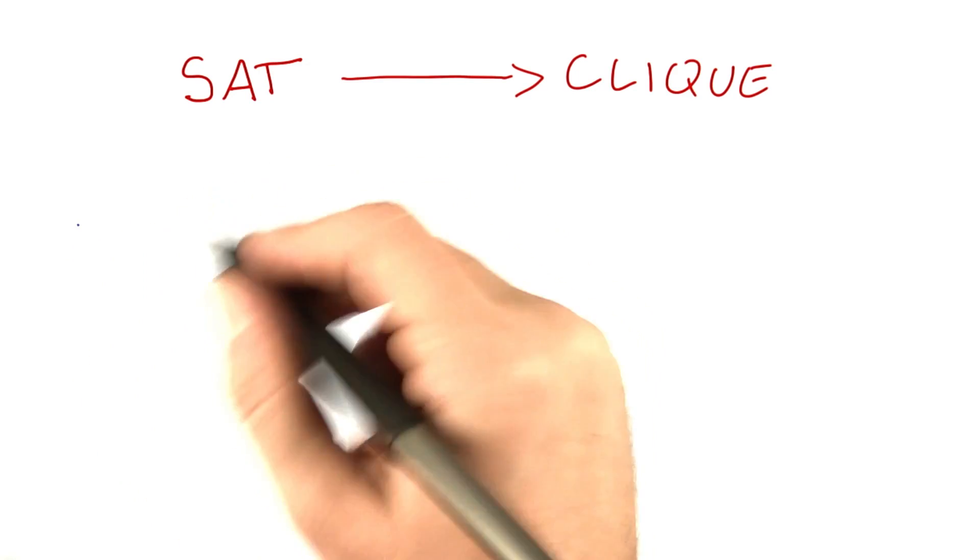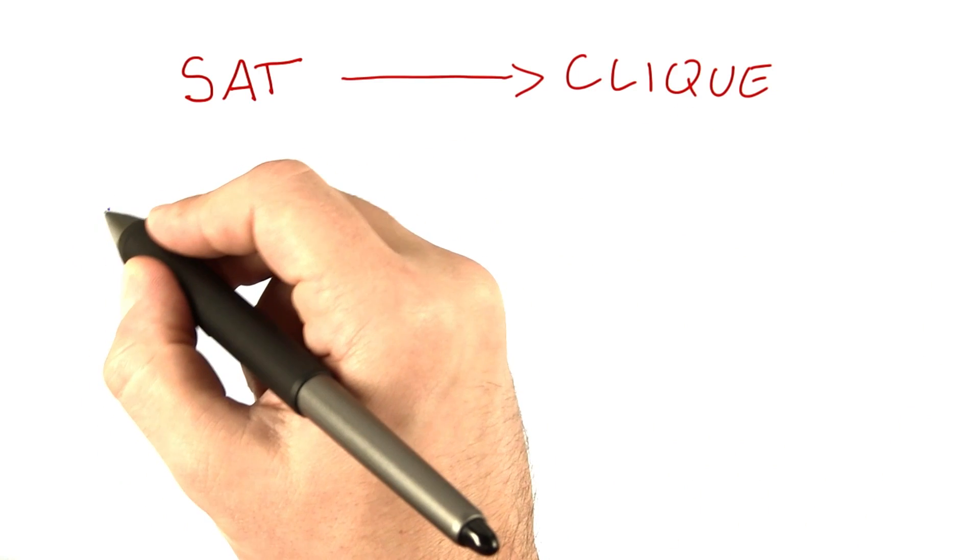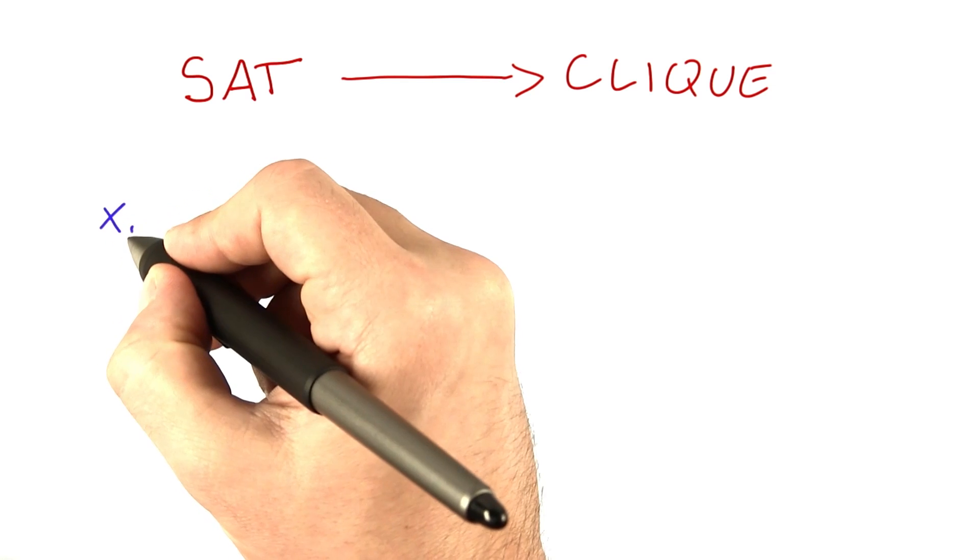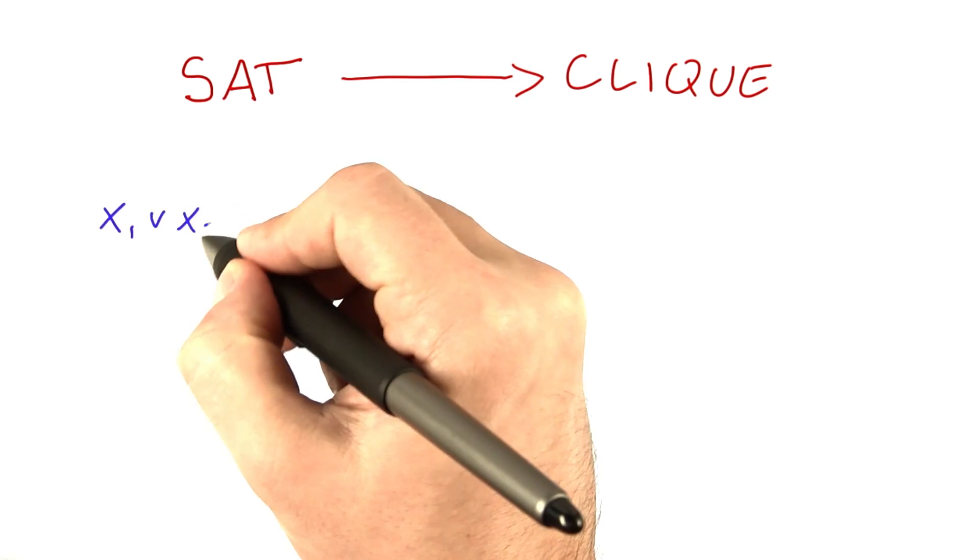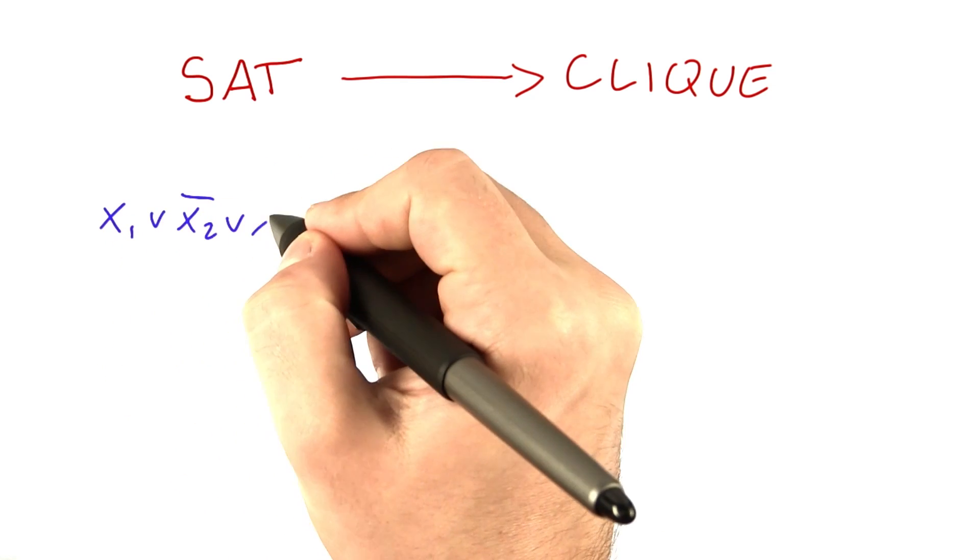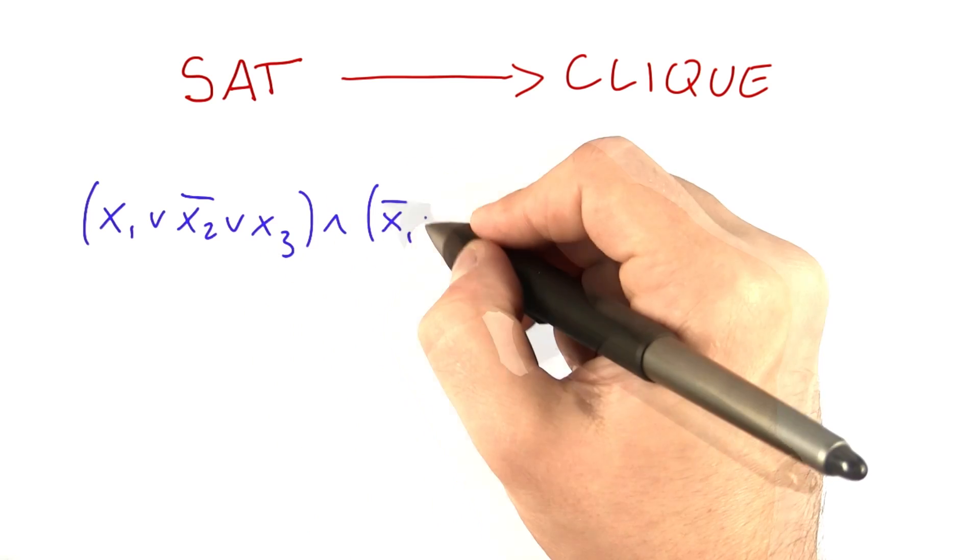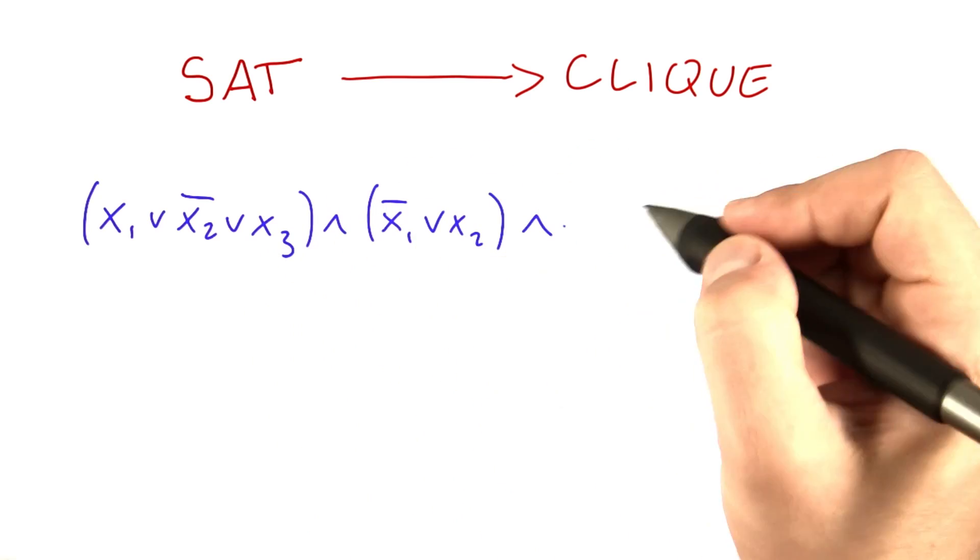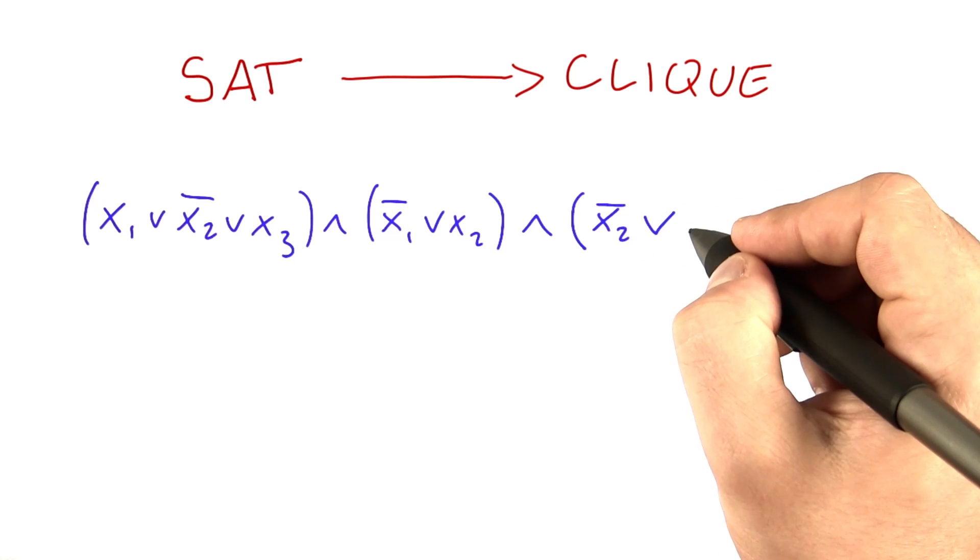So let's say we are starting out, and I'm going to do this using an example. Let's say we start out with the following Boolean formula: x1 or not x2 or x3, and not x1 or x2, and not x2 or x3.